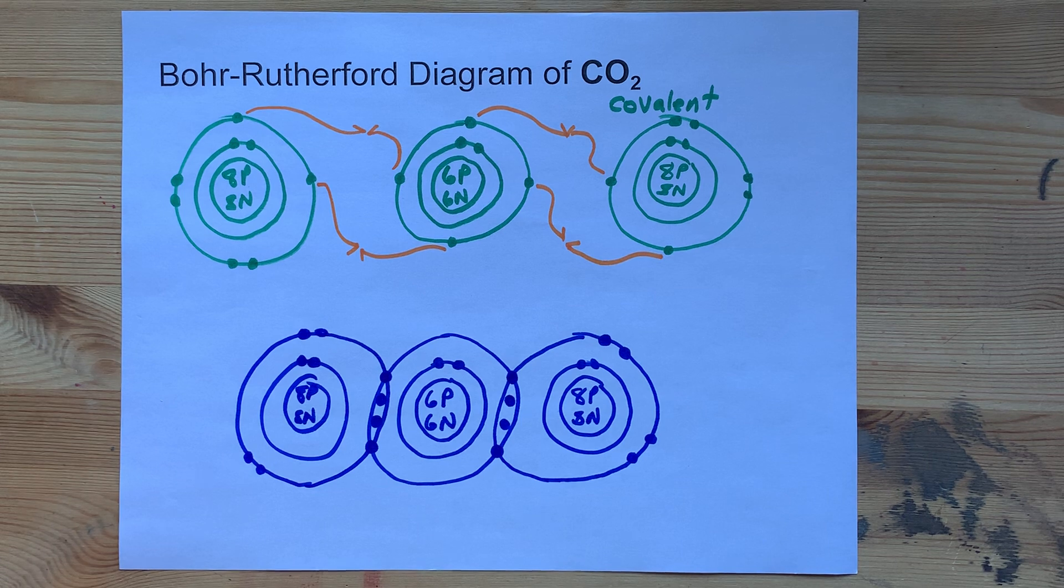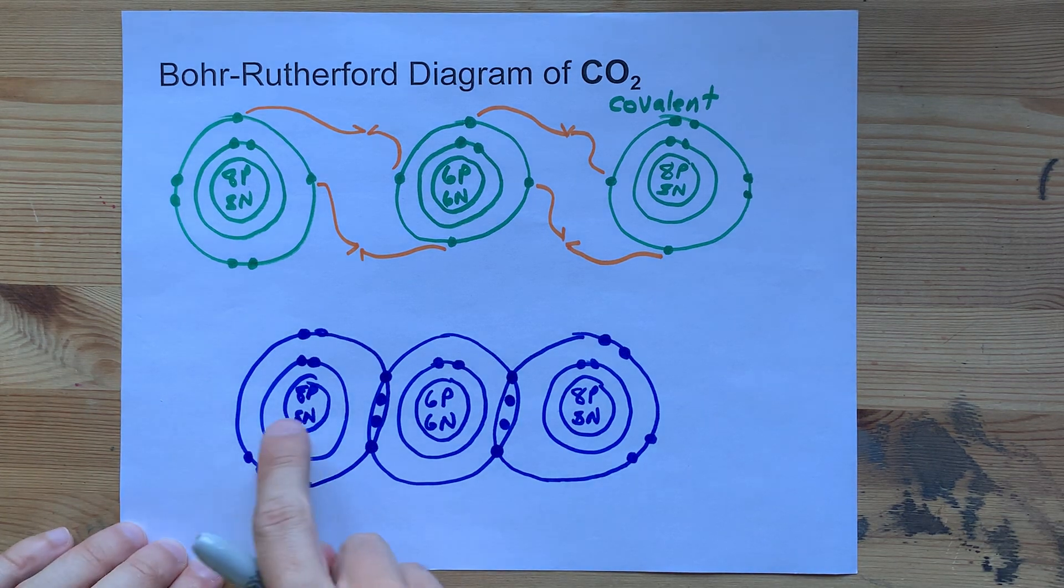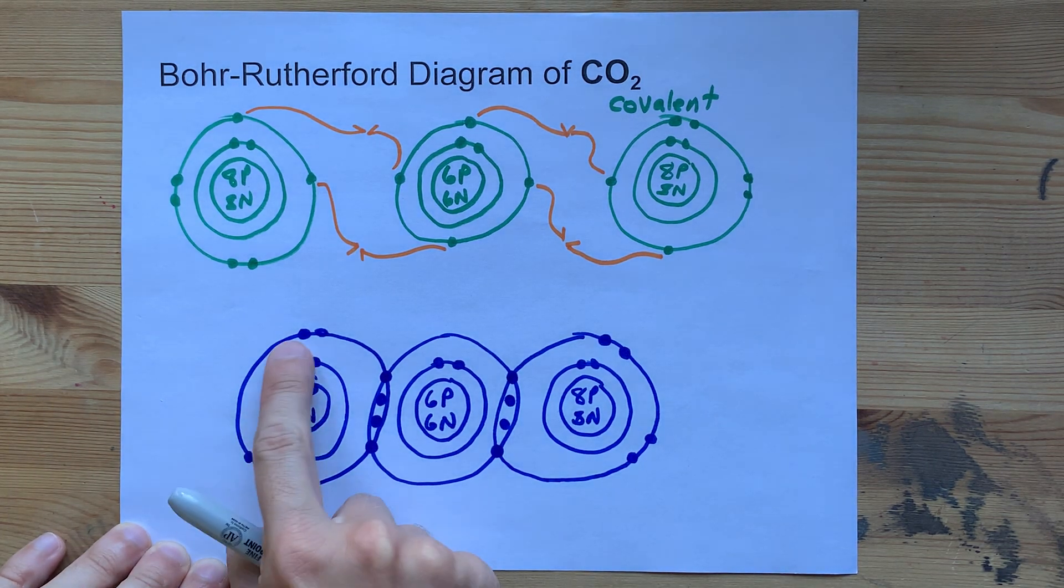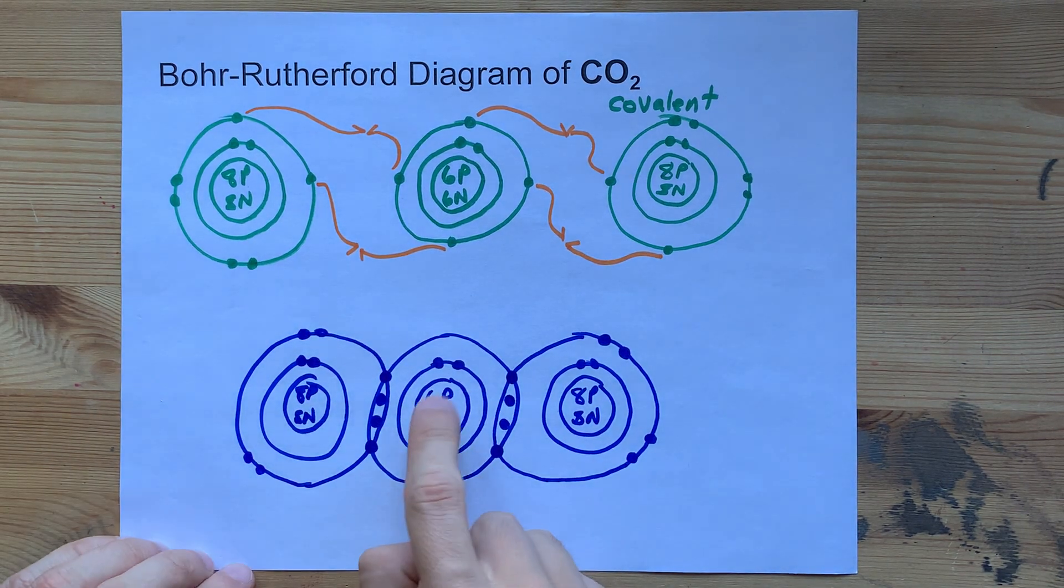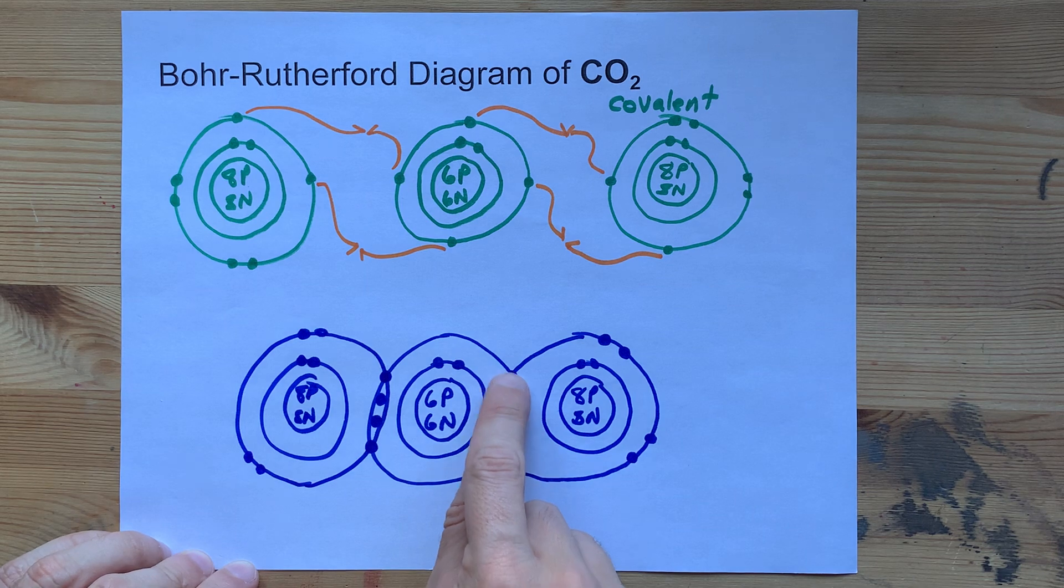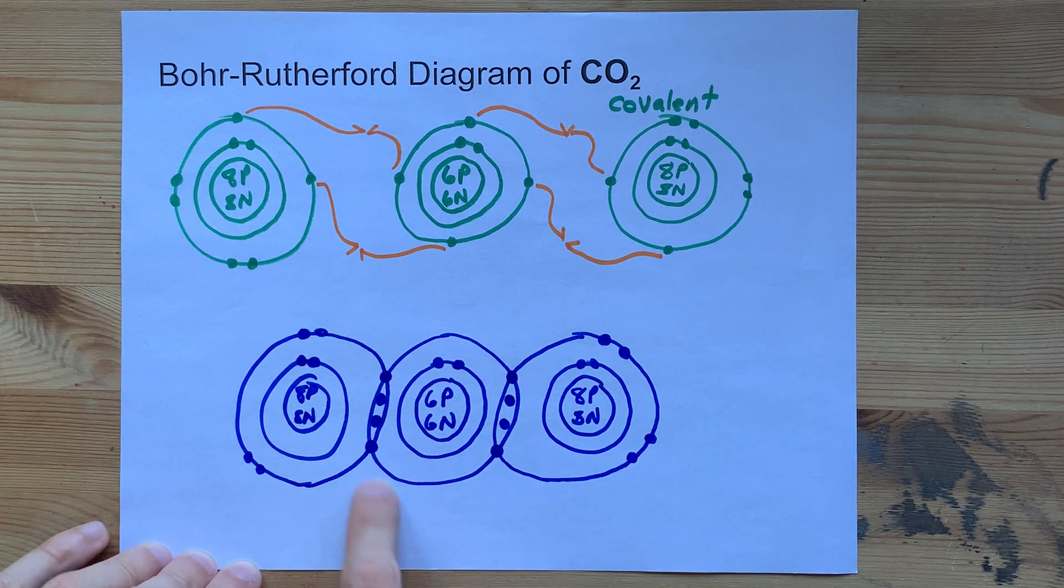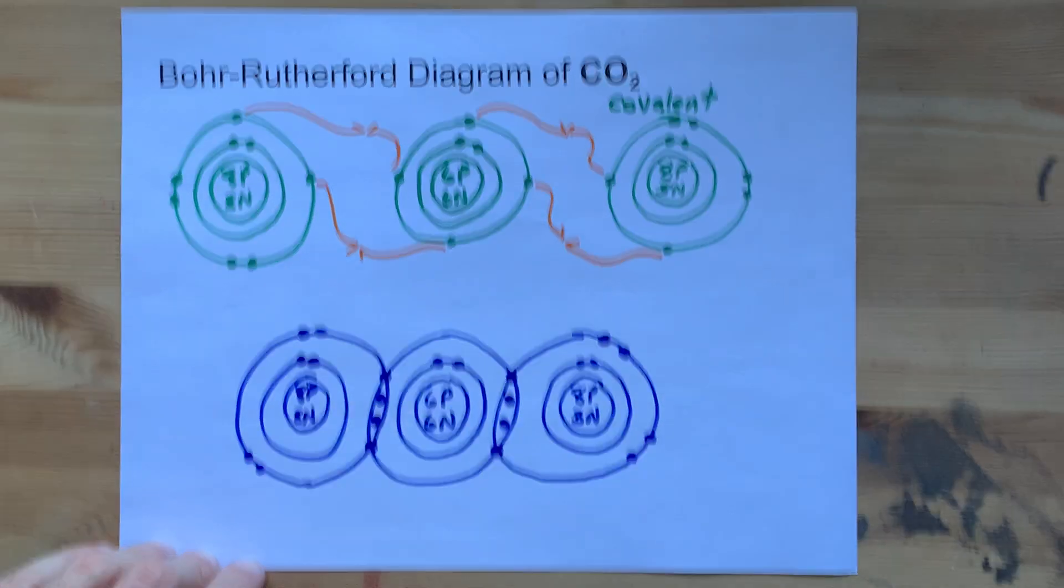Now, take a look at the outer shell of each atom. The oxygen here has one, two, three, four, five, six, seven, eight electrons. Octet rule satisfied. Carbon has one, two, three, four, five, six, seven, eight electrons. Octet rule satisfied.